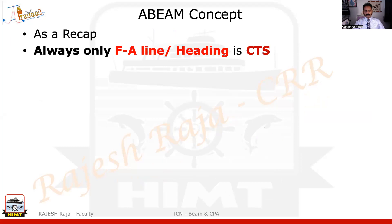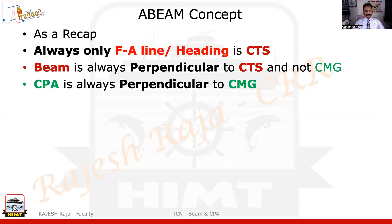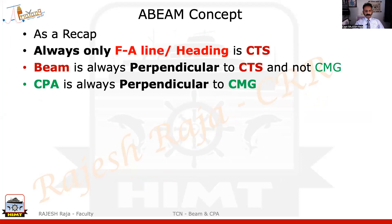Your fore-and-aft line heading is always the CTS. Beam is always perpendicular to the CTS. CPA is always perpendicular to the CMG. One small exception is that when there is no current or wind, your CTS equals CMG, so CPA and beam positions are the same and all the readings will also be the same. This last point is what we saw in the last module.